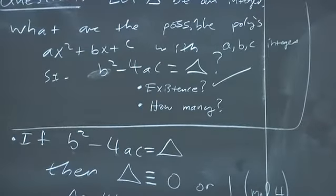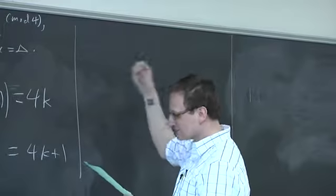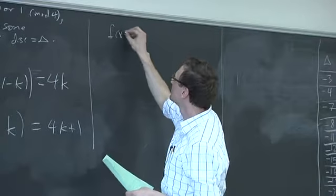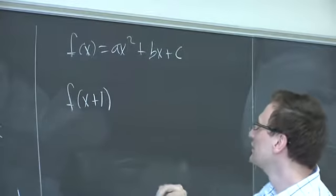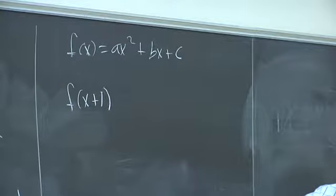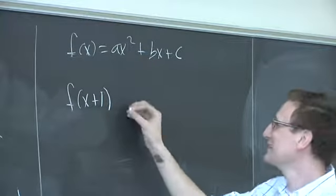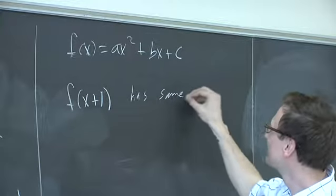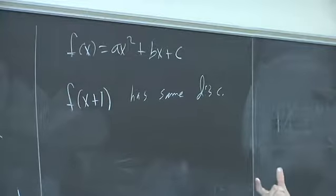This is going to be the hard part. The first answer to 'how many' is: a lot. For instance, if I have two functions and you look at them, they have the same discriminant — that basically corresponds to translating my function to the left. You could translate it left or right by any integer and get the same discriminant. So obviously there are infinitely many, and we need to revise the question a little bit.